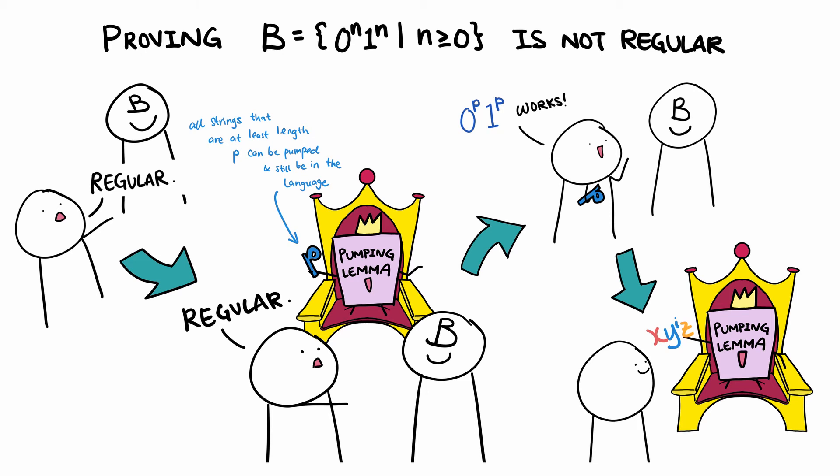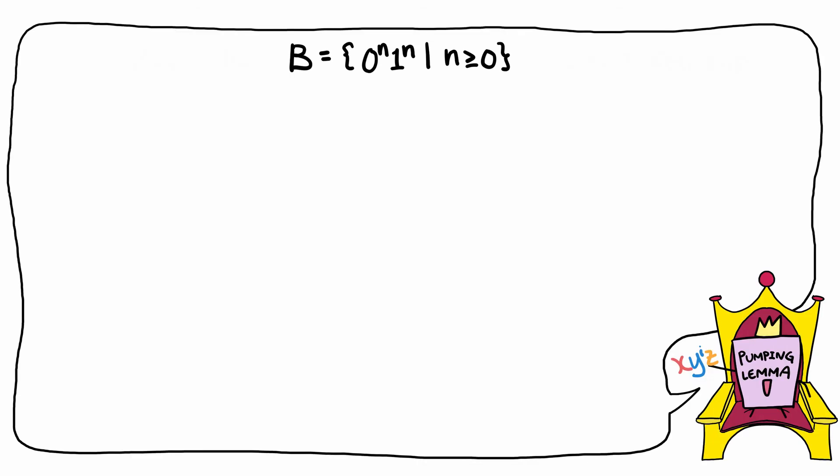And this is where we see things go wrong and the contradiction kicks in. We can argue that there are three cases for how the pumping lemma could have chosen y. It could have chosen all 0s, all 1s, or a combination of 0s and 1s as the pumping string.